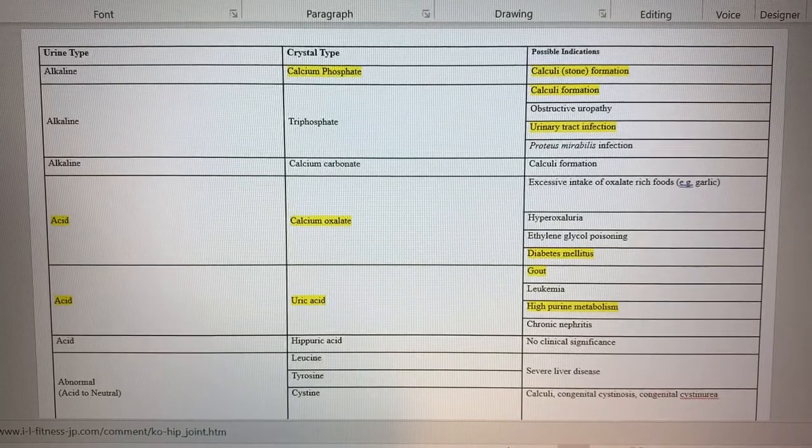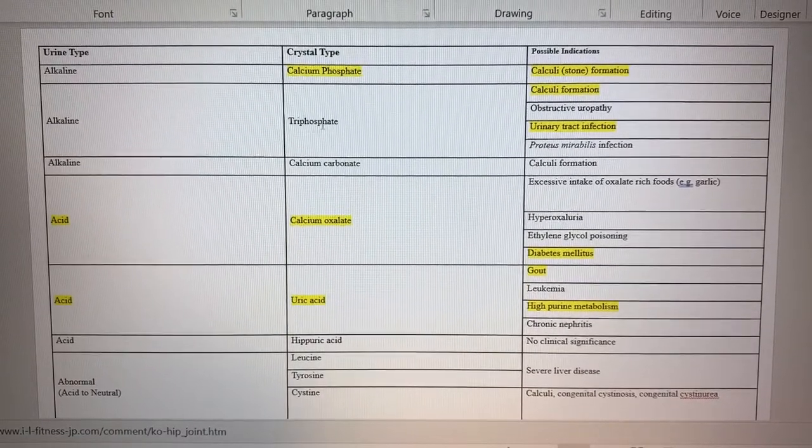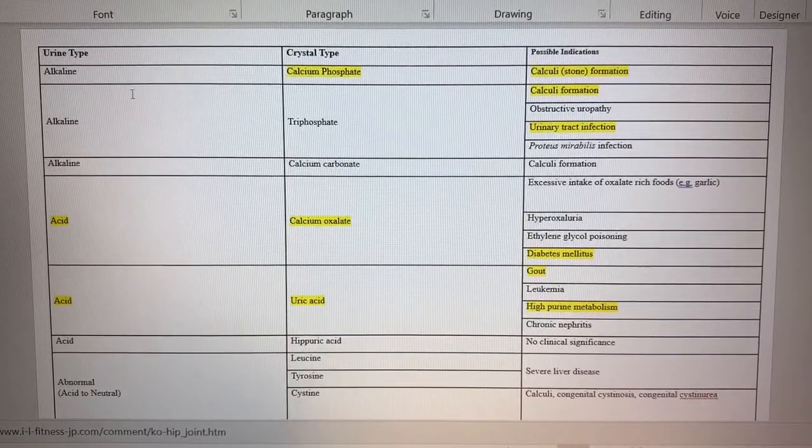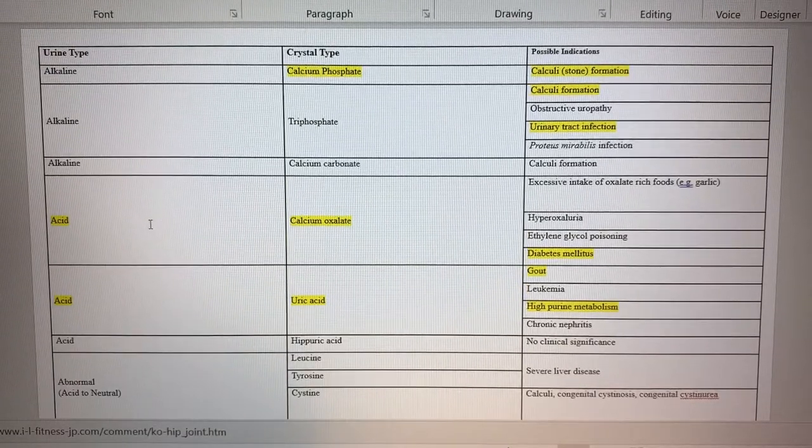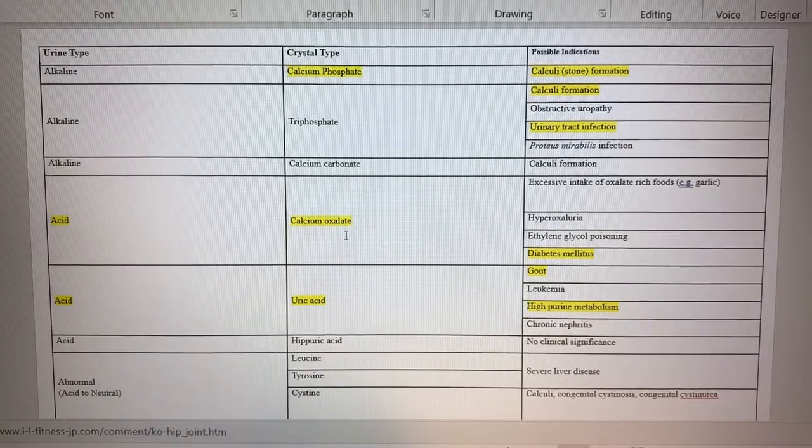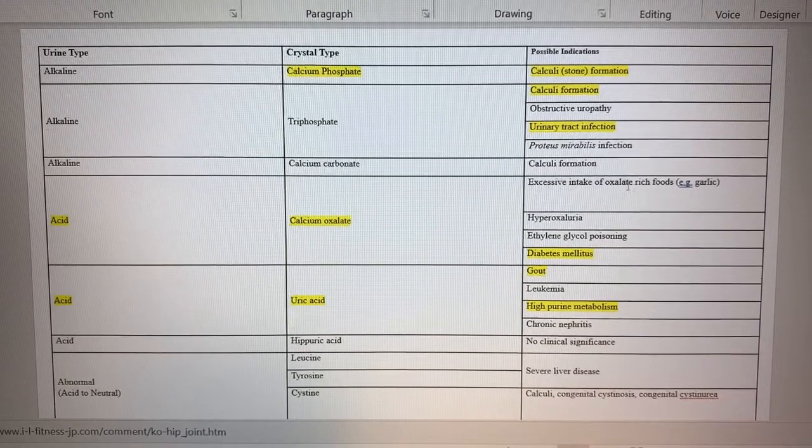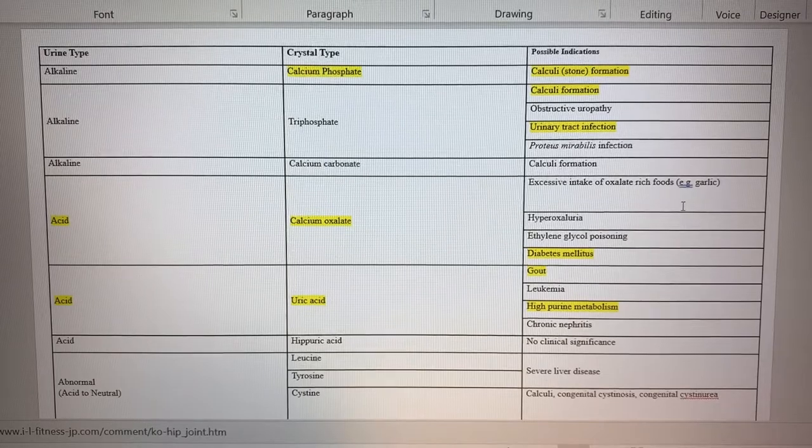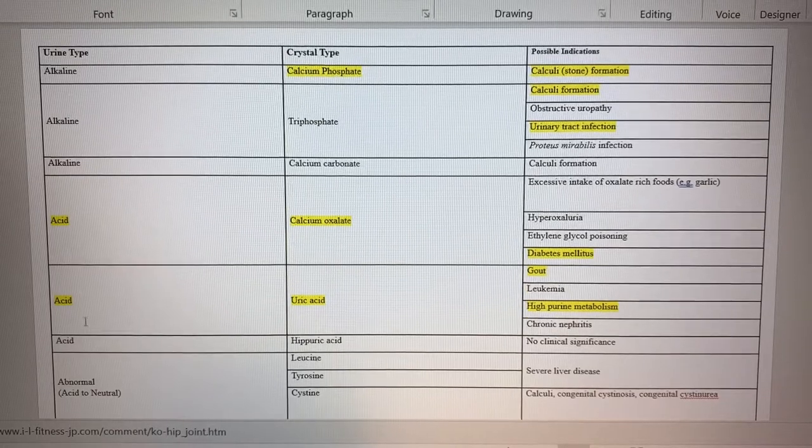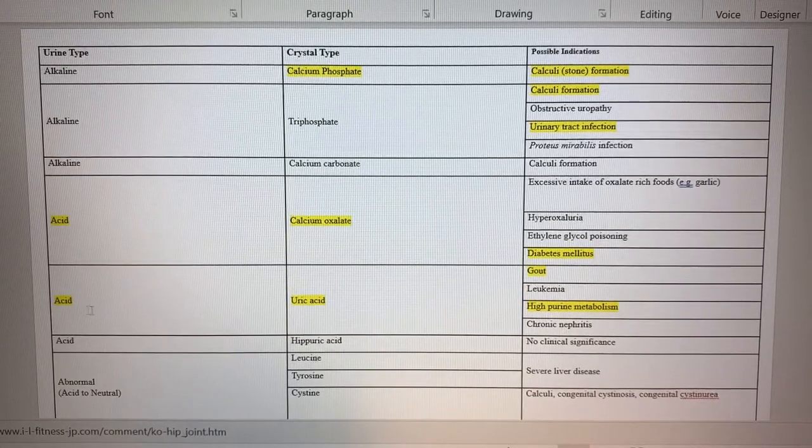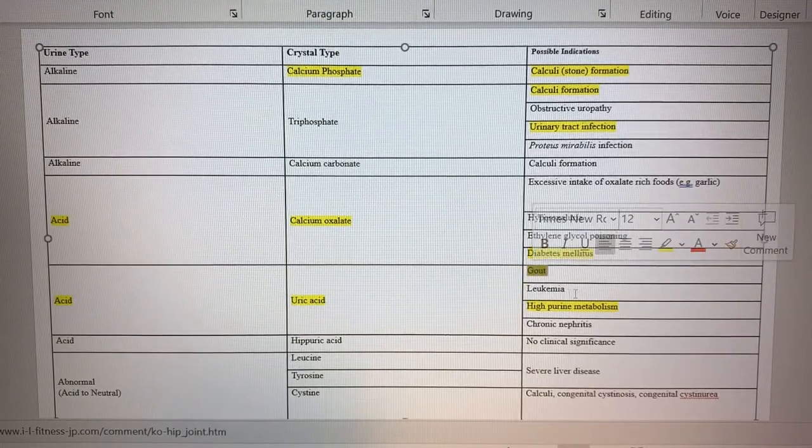Here's a list - don't memorize this list. I've highlighted some things you might want to be aware of, but do not memorize the types of crystals associated with the pH of urine for this class. It is good to know we've got acid - you might see something called calcium oxalate as the crystal type, and you'd see that in a diabetic patient or with oxalate-rich food. People that have ingested a lot of that, like garlic - you'd have to eat an awful lot of garlic to form a stone from that.